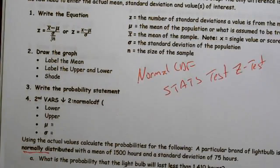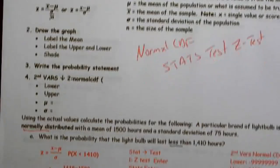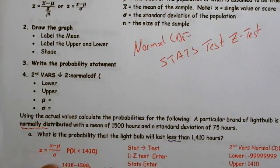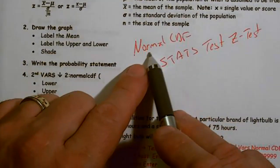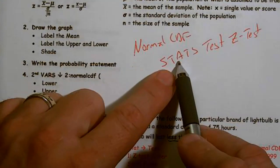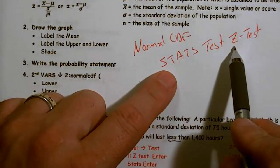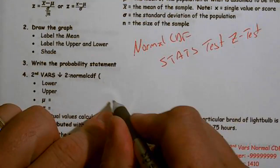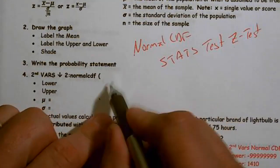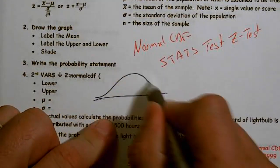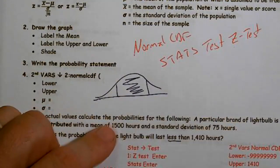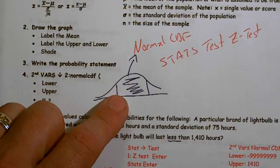We're going to continue working with problems involving the normal curve and we will look at them in two different ways. We're going to look at solving with a normal CDF and the stats test Z-test function of the calculator. The normal CDF is really nice because it's great for problems where you're having to shade in between — so if you're looking for a distance between values, normal CDF is the way to go.